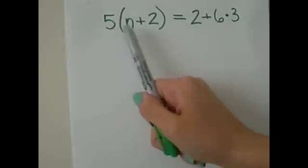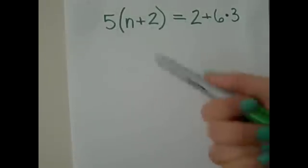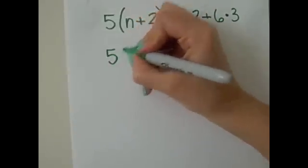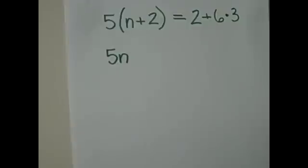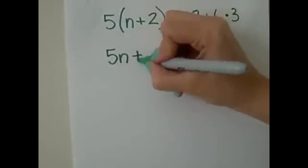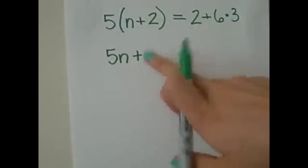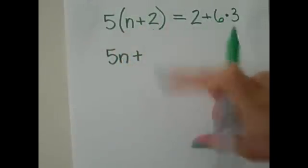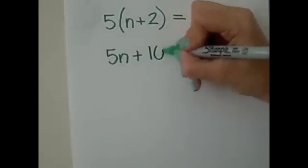Well, first we do 5 times n, and since we don't know what n is, we're just going to put 5n. Then we have a plus sign, so we're going to bring that down. 5n plus. Now we have to distribute that 5 again. 5 times 2, and that equals 10.